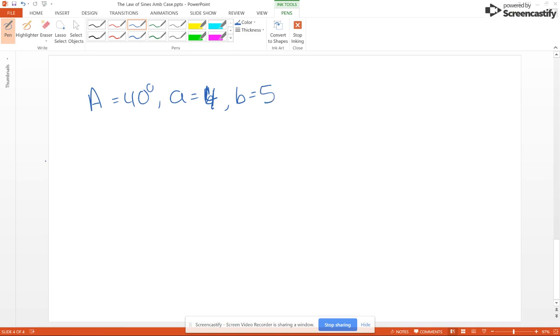And to find angle B2, we're going to take 180 minus B1, and that would be 180 minus 53.5 degrees, and that's going to give us 126.5 degrees.